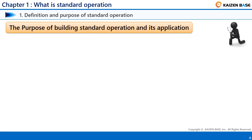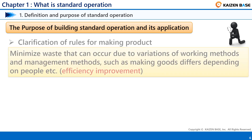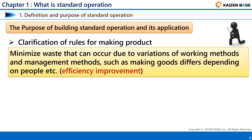The purpose of building Standard Operation and its application is roughly divided into two. The first is Clarification of Rules for Making Products. The existence of Standard Operation minimizes waste that can occur due to variations of working methods and management methods, such as making goods differently depending on the person. This contributes to efficiency improvement.